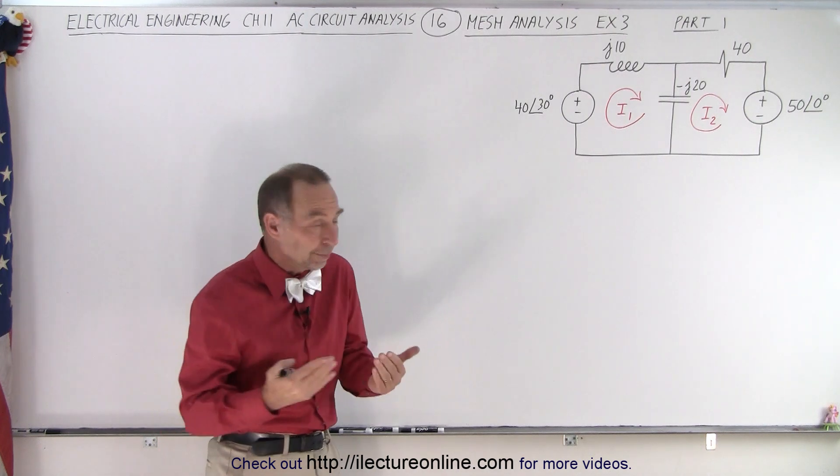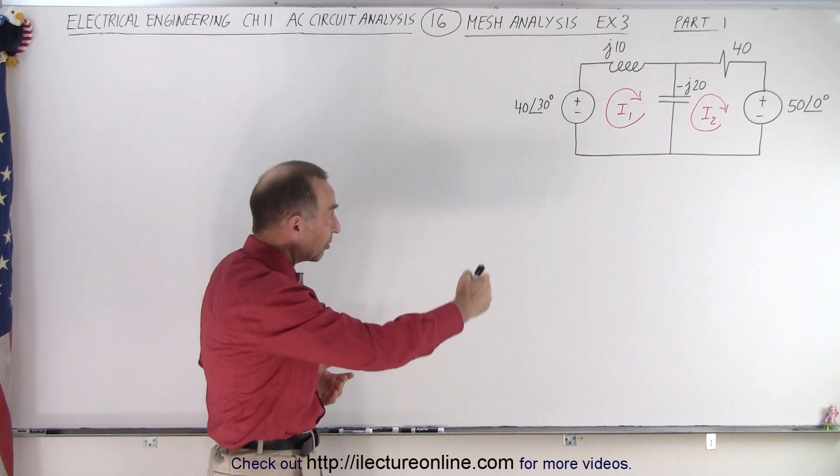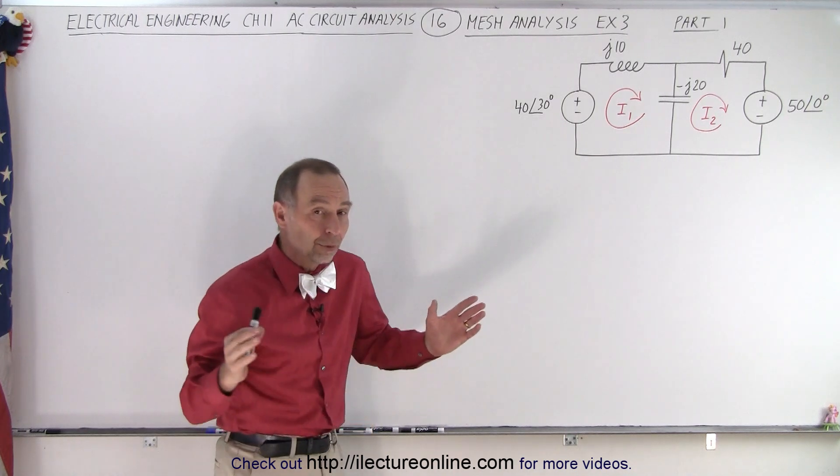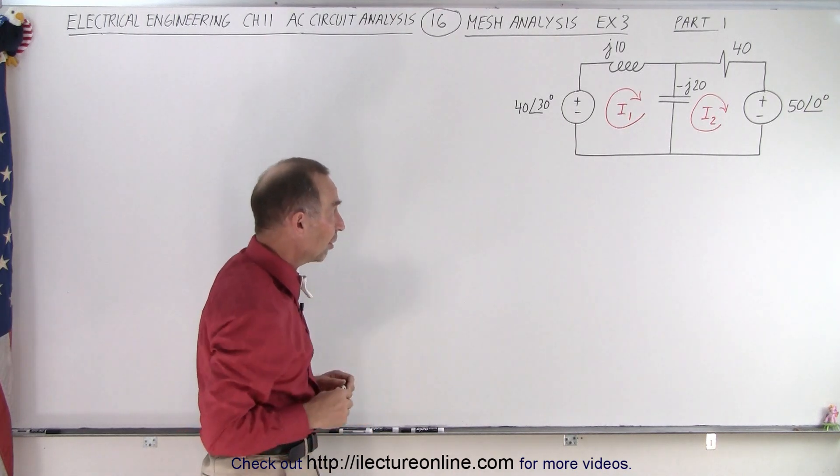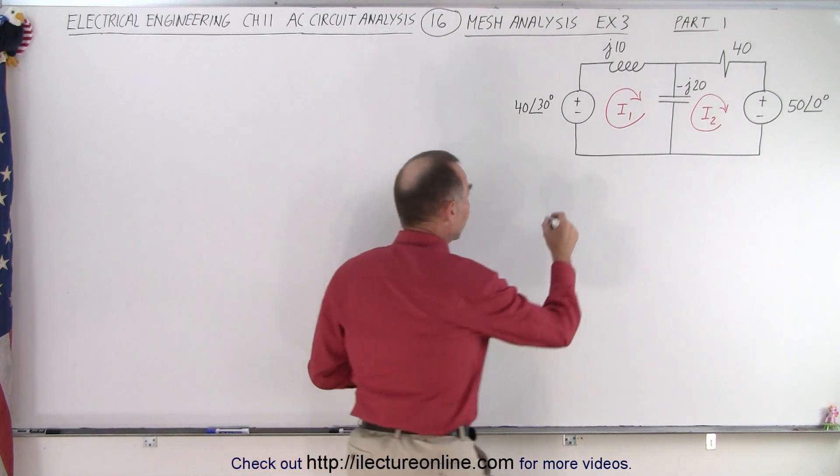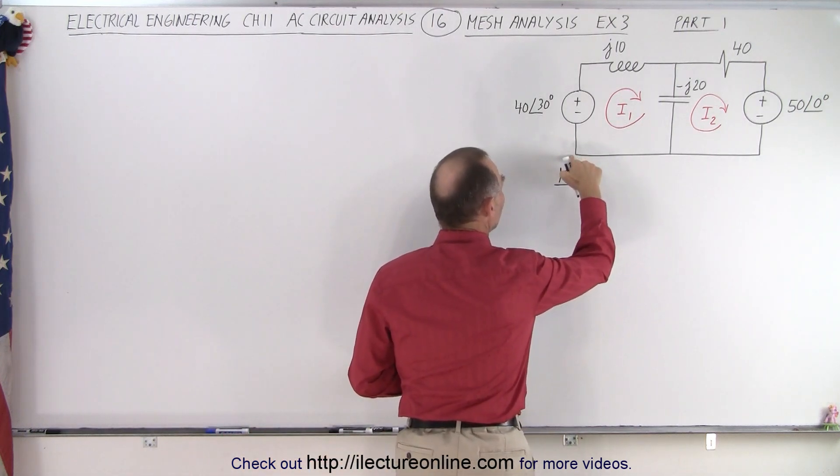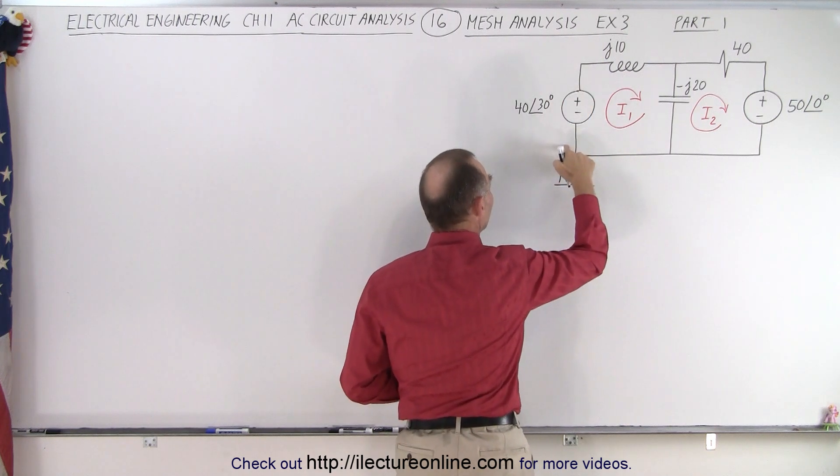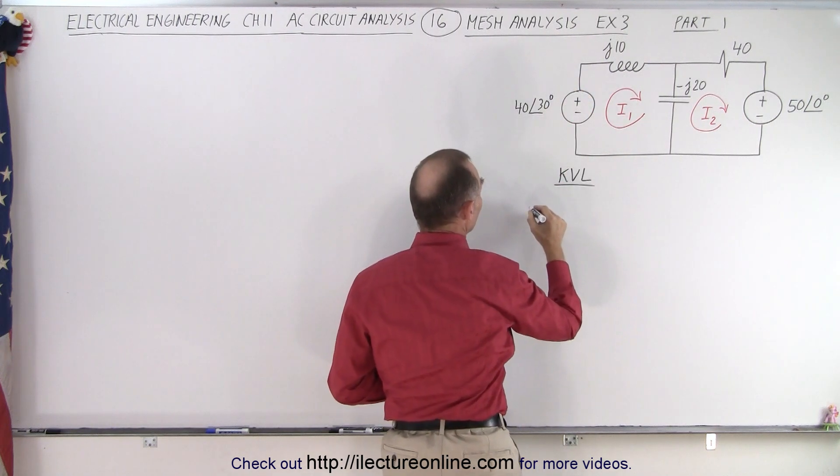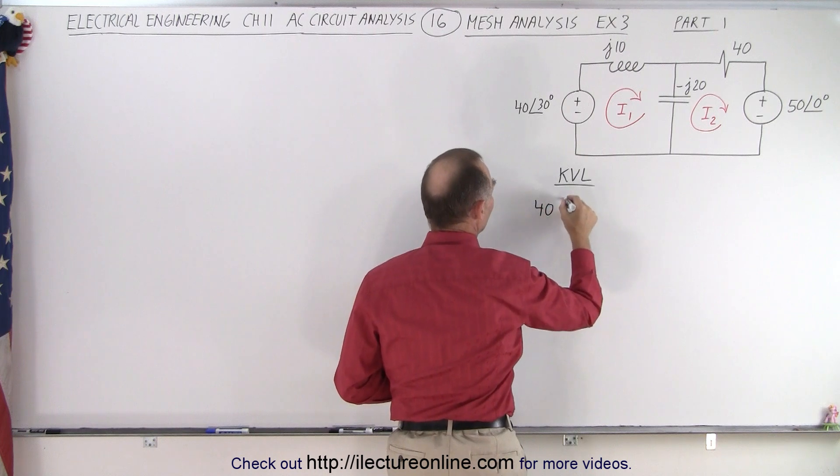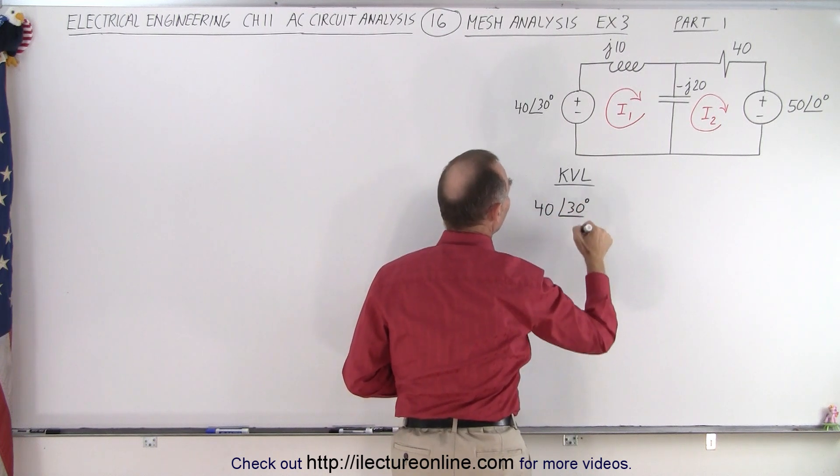So let's go ahead and use the KVL method. We add up all the voltage rise and drops around each mesh and then we should end up with two equations that we can solve for the two currents. So starting with the left mesh using KVL, let's start in this corner right here. We go across the power supply from here to here. That's in the positive direction.